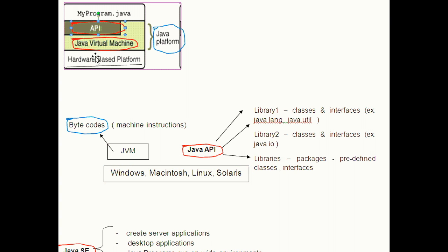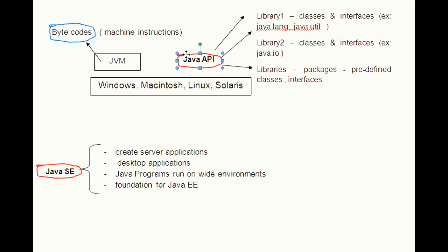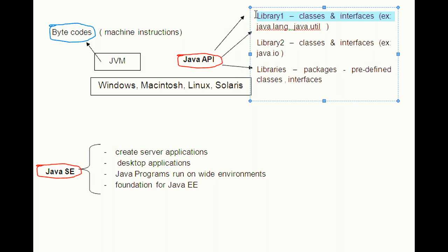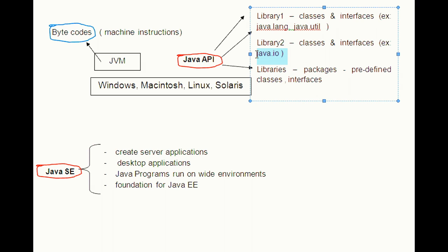The second component is Java API. Java Application Programming Interface is a large collection of ready-made software components. It is grouped into libraries of related classes and interfaces. These libraries are known as packages. Packages contain predefined classes and interfaces. For example, java.lang, java.util and java.io are all predefined packages.